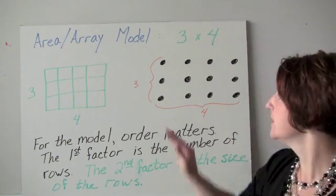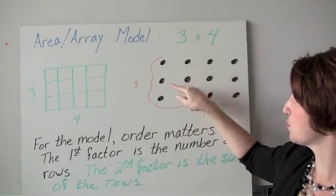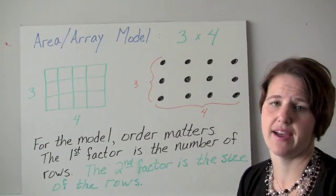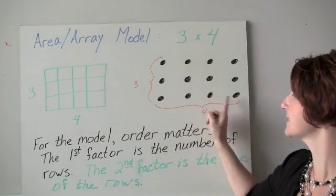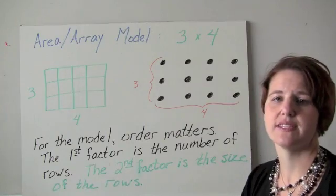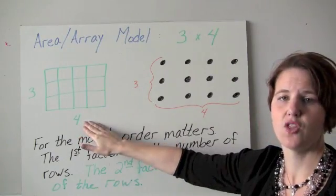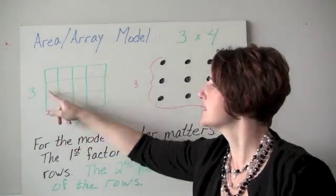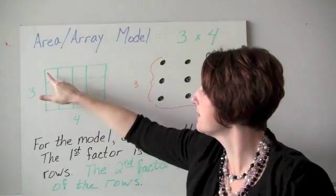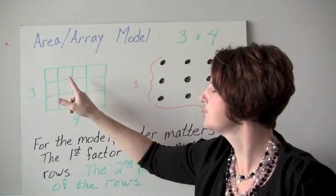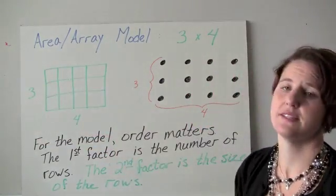For the array model, order matters: the first factor tells us the number of rows — rows go horizontally, so there are three rows. The second factor tells us the size of those rows; there are four objects in each row. This is a three by four array. Same idea with the area rectangle: vertically it's a distance of three, and horizontally it's four.